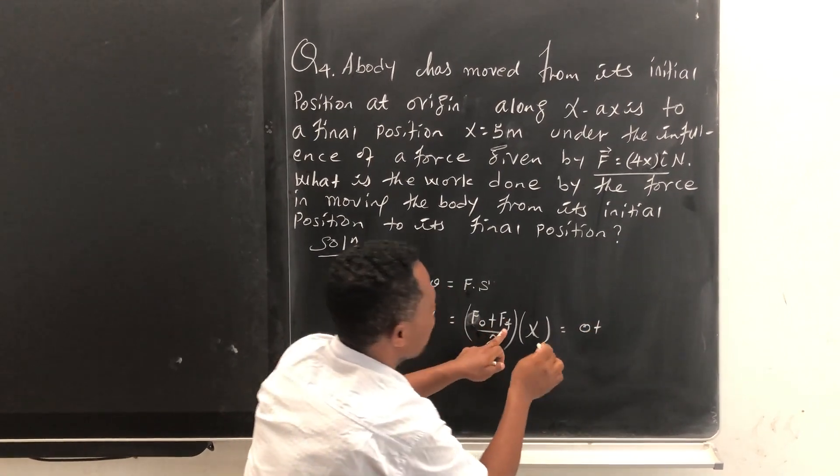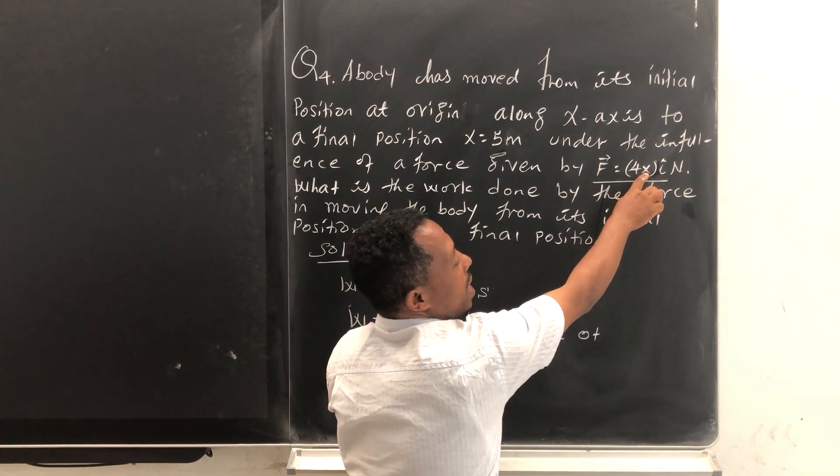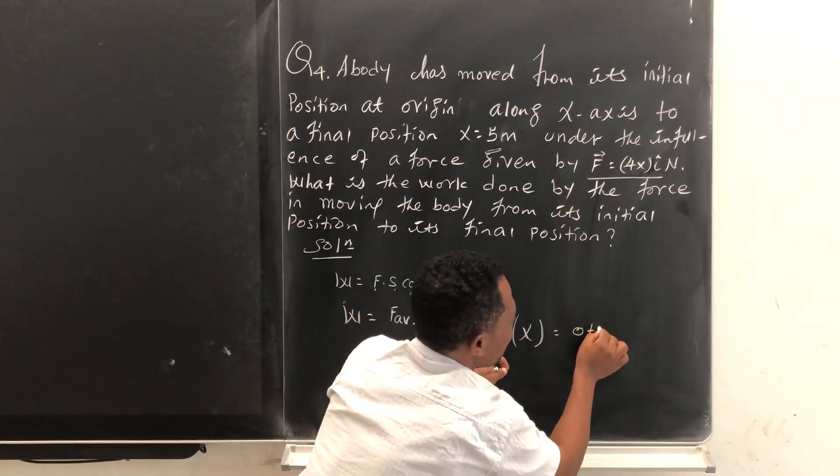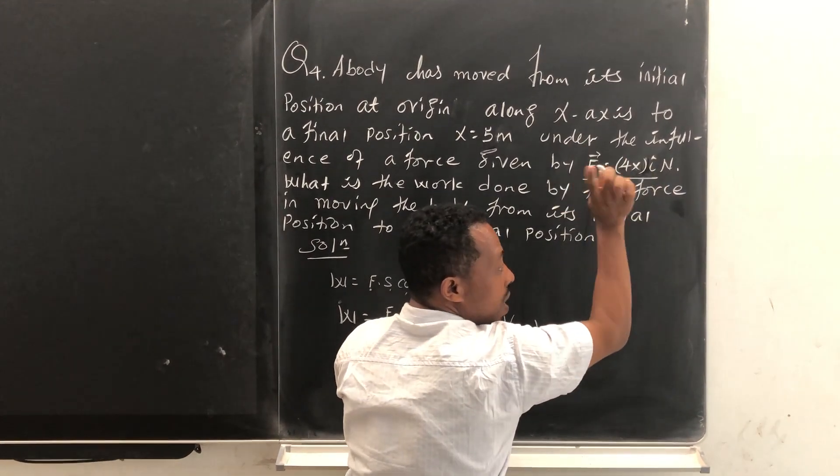And then look here, zero plus the final F value. Just substituting here five, four times five is twenty. Twenty i, i dot i is one, so this is simply 20 newton.